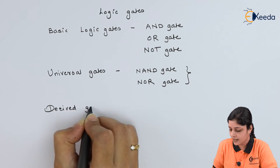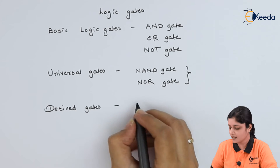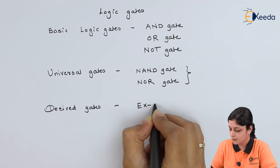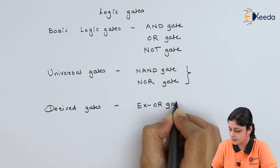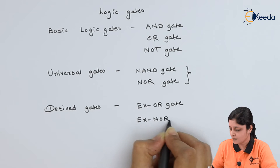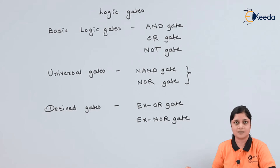Then we have derived gates. Examples of derived gates are the XOR gate and the XNOR gate.